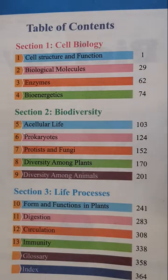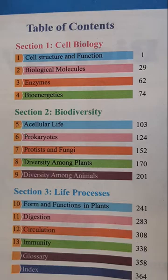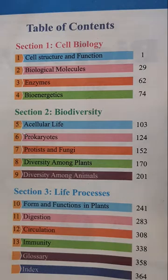Section 2 is Biodiversity. Biodiversity simply means the variety of life — the variety of living organisms present on the earth's surface. In this section we will study a variety of living things, starting right from acellular life. Chapter 5 covers viruses. We will then move to Chapter 6, Prokaryotes or Kingdom Monera.